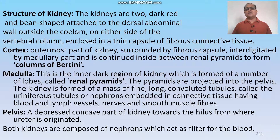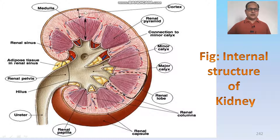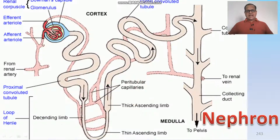The two kidneys are composed of nephrons, which act as filters for the blood. In this longitudinal section of the kidney, made up of fibrous connective tissue, this is the cortical part, this is the medullary part, and these are the renal pyramids which filter the urine. Urine comes out into the minor calyx, minor calyx into the major calyx, major calyx into the ureter and outside. This is the ultrastructure of the nephron.